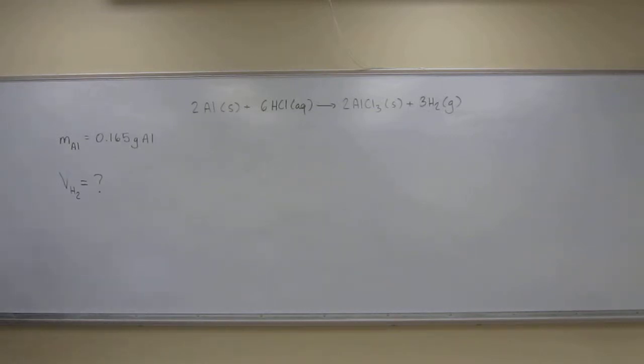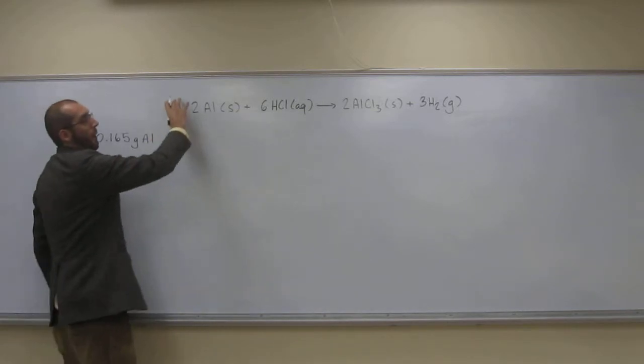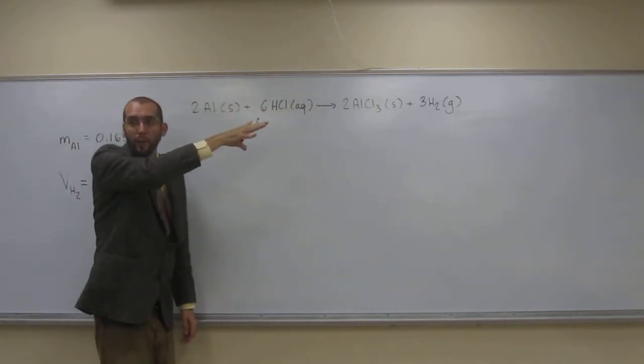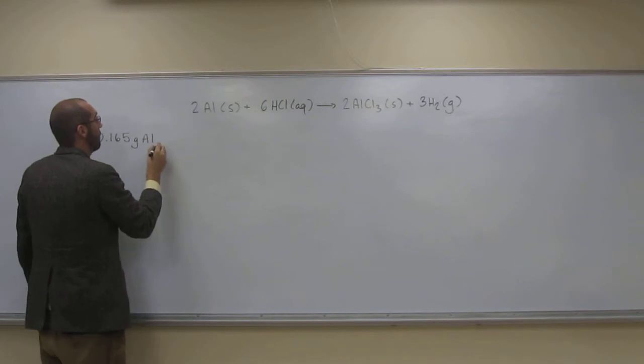So, we're looking for volume of hydrogen gas, and we've started out with the mass of aluminum. So what's the first step we need to do? Convert aluminum to moles. That's the first step. This is a balanced reaction equation, so we don't have to balance that.